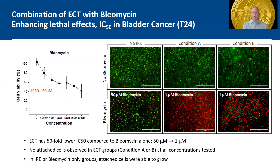We've studied a variety of drugs and looked at in vitro studies using, for example, bladder cancer cell lines as a surrogate model. Looking at the IC50 of bleomycin by itself, there appears to be over a 50-fold improvement in that IC50 with the addition of electroporation processing parameters. Here in the graph, you will see that there is a one micromolar concentration with sufficient damage to the cellular contents, as well as a tumor spheroid condition, such that there were no attached cells in either the combination group studied in these conditions.